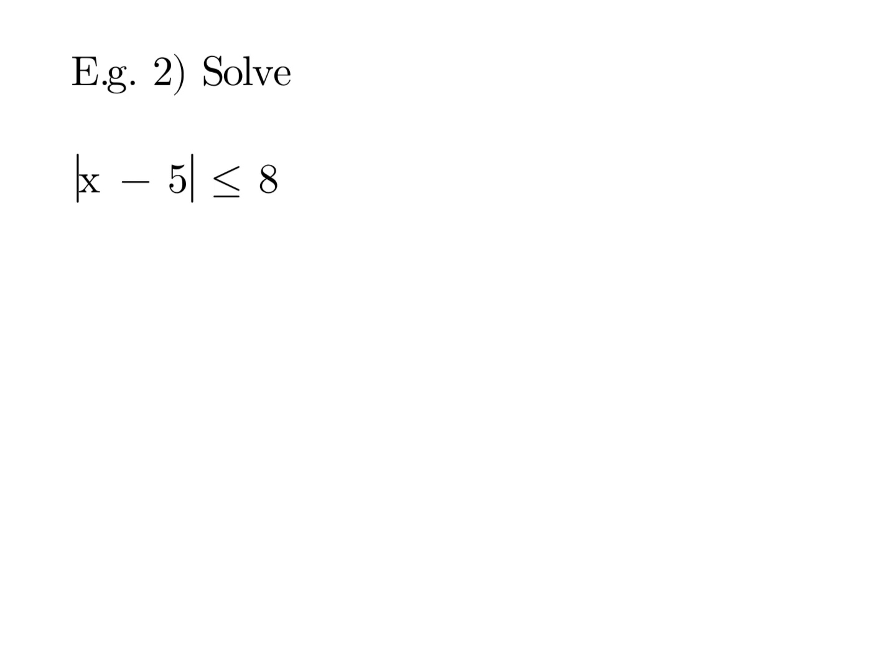So if we use the exact same question but just put an inequality in, we have the same concept. So x minus 5 is going to equal to x minus 5, and 8 is one of our solutions, and x minus 5 and minus 8 is our other one.